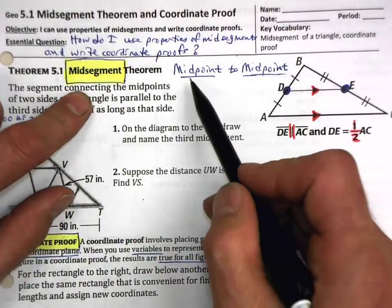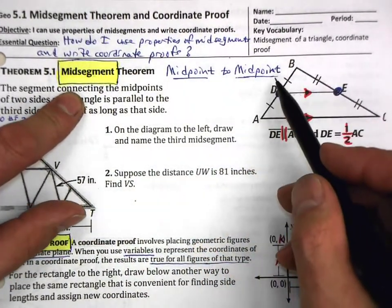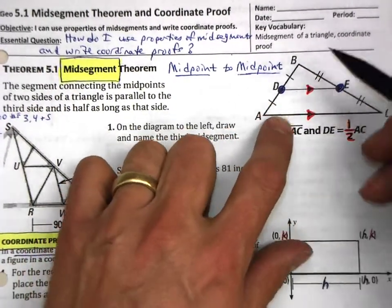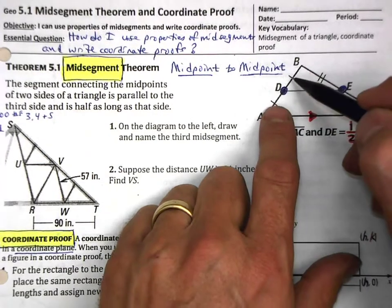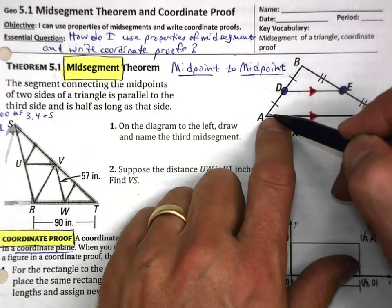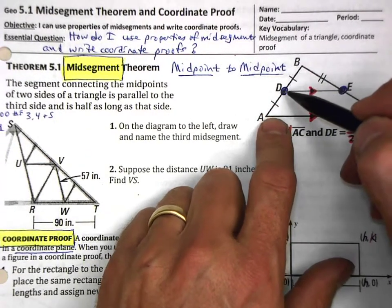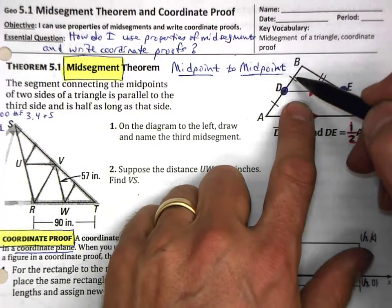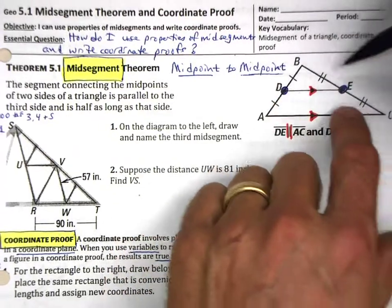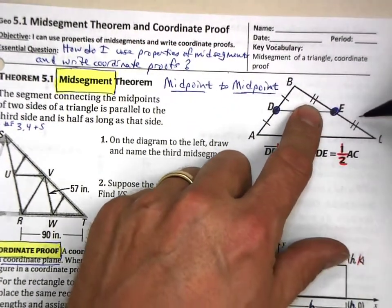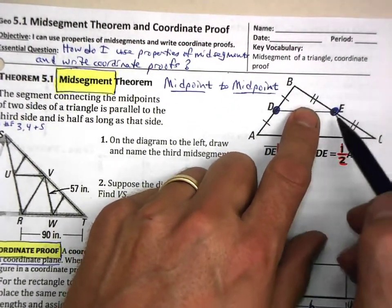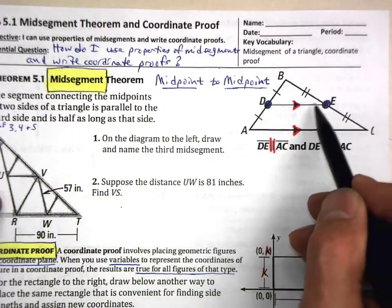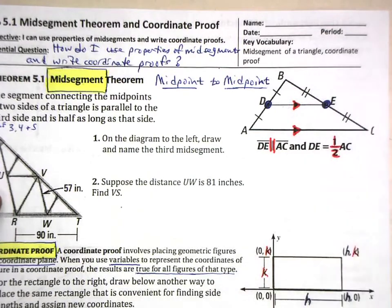A mid-segment goes midpoint to midpoint on a triangle. So how do we know that this is a midpoint? Because these two segments are congruent to each other, so this point is halfway down this side, and therefore this is the midpoint. Same thing over here — these two segments are congruent, therefore this is the midpoint. And this segment right here is called a mid-segment.